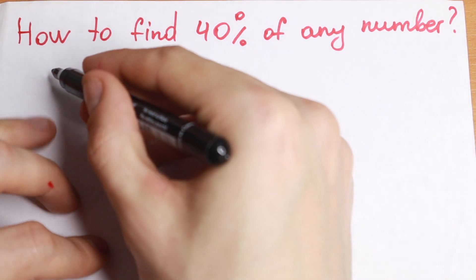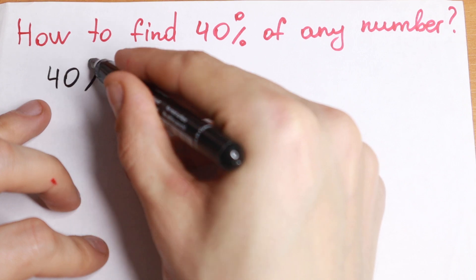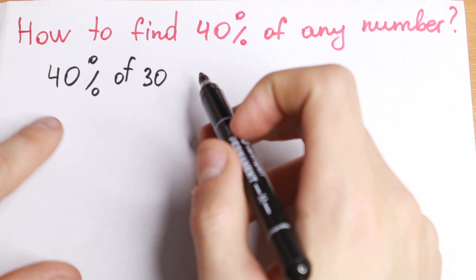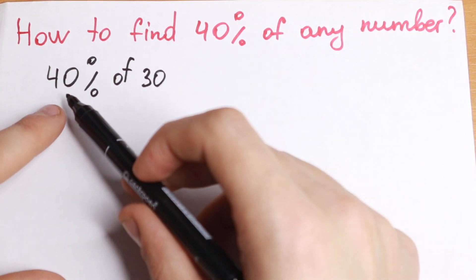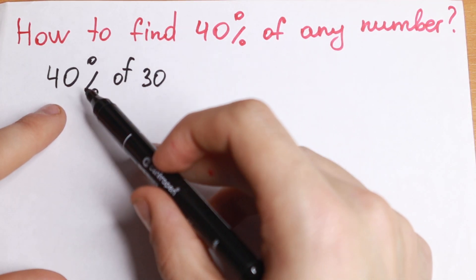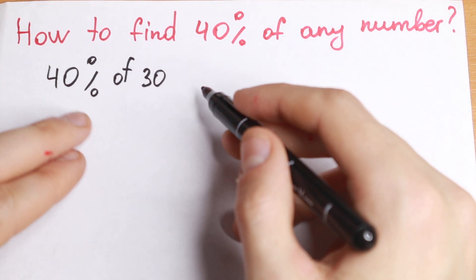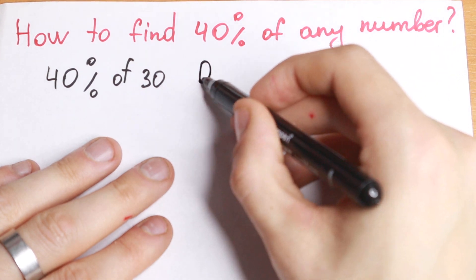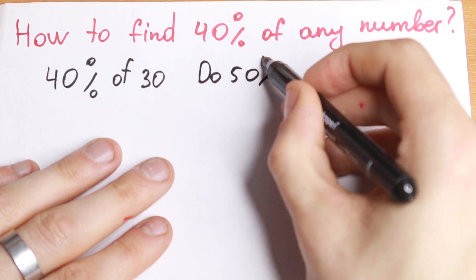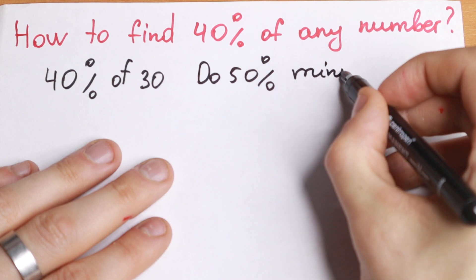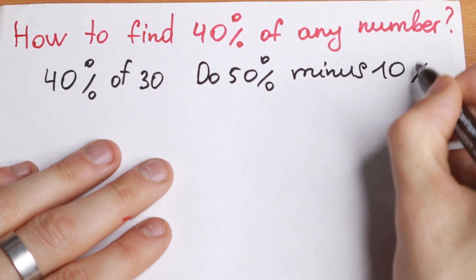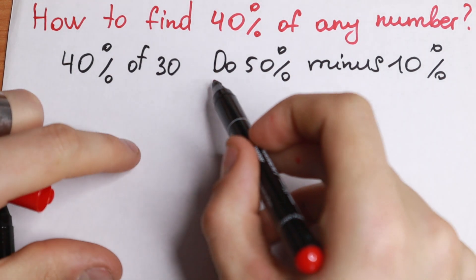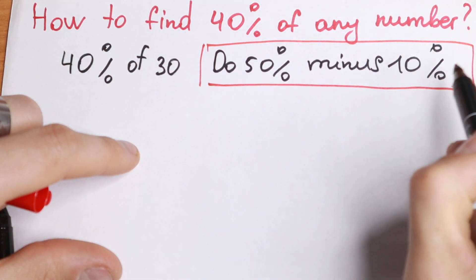So first, take a look. For example, we need to find 40% of 30. This is not a good percentage, because if we have 50, 25, or 75, we can solve it in 1 or 2 seconds. But we have 40% of 30, so how can we solve it? We need to do 50% of 30 and minus 10%. This is the rule I wanted to show you — it's a really good rule if you want to find 40% really fast.